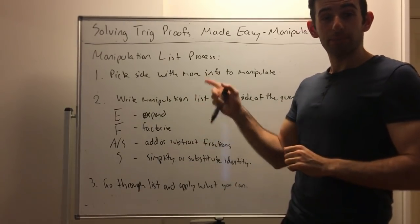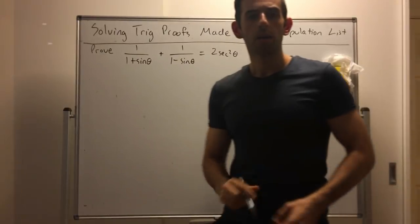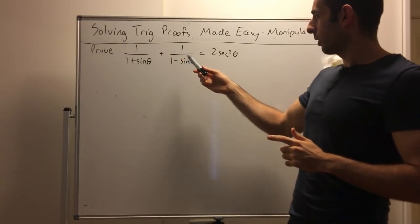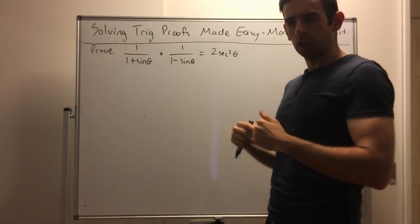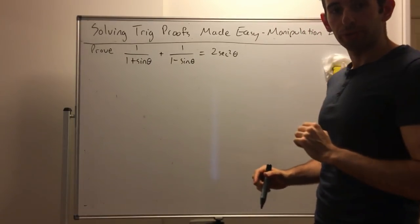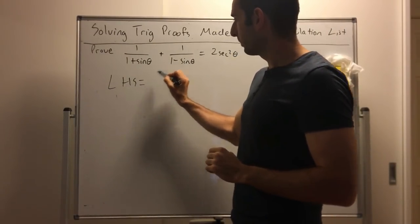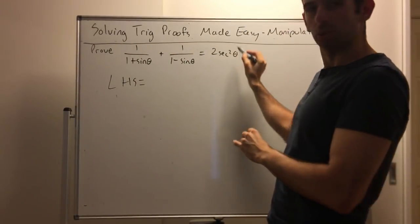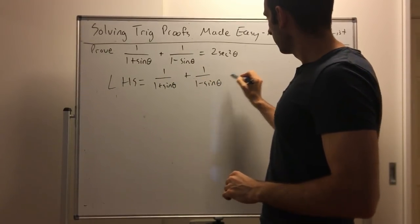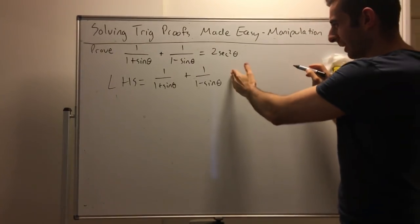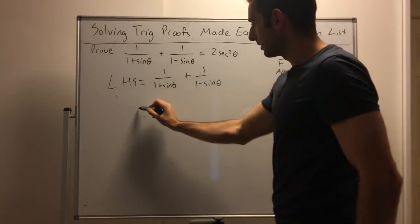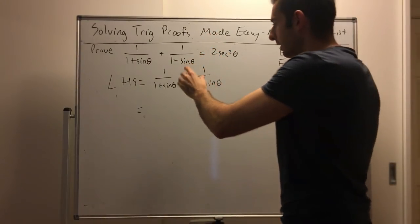Now let's look at how we apply this list for a mid-range question. We want to prove: 1/(1+sinθ) + 1/(1−sinθ) = 2sec²θ. If you're doing Year 10, Year 11, or a pre-calculus course, this is the kind of question you might see. We're going to pick the side that has more to work with, which is the left-hand side. Let's write down the left hand side, and in a separate corner write our manipulation list: E, F, A/S, S.